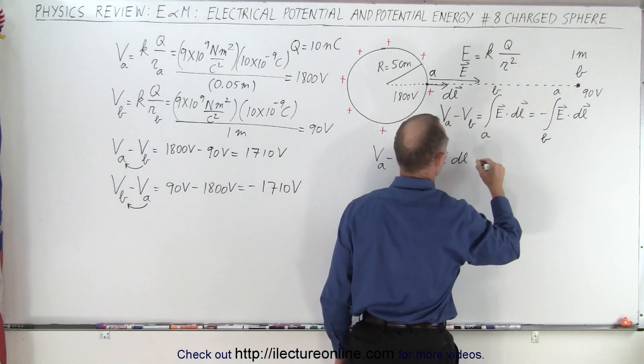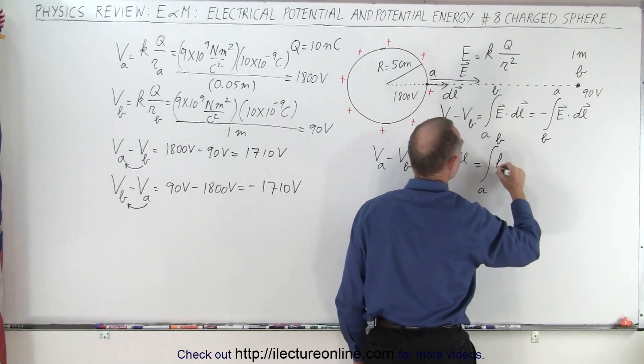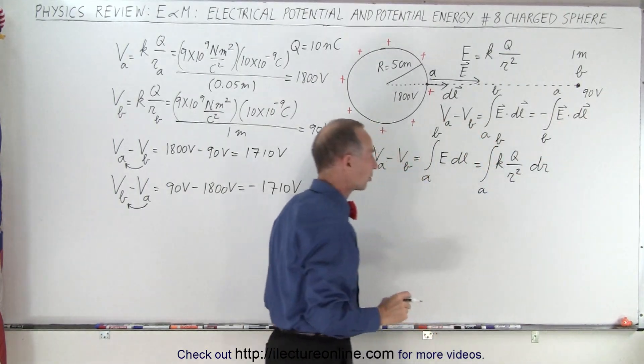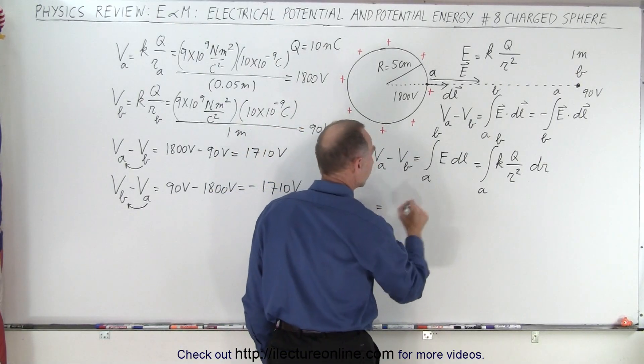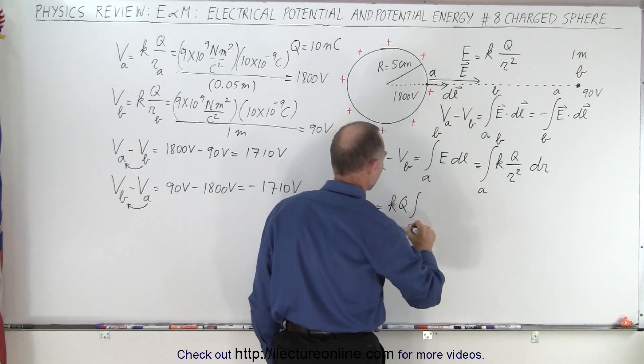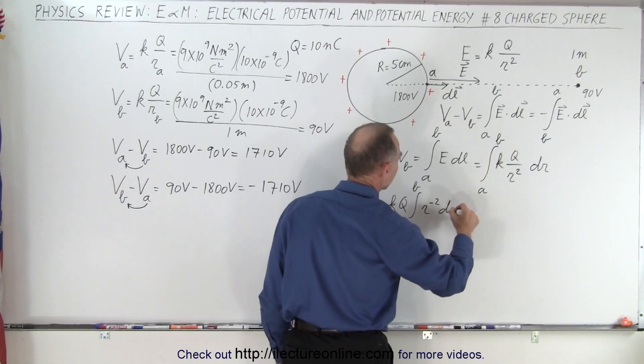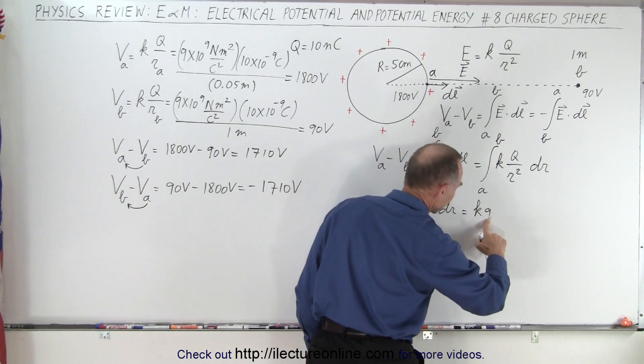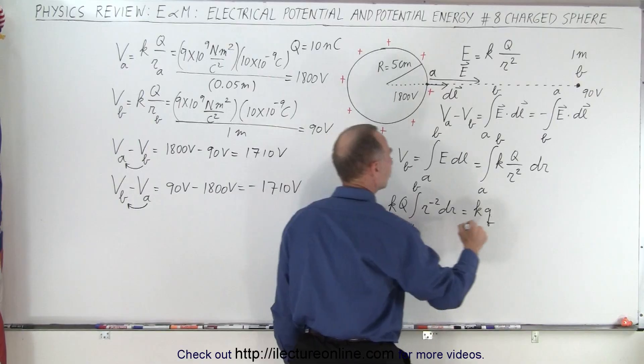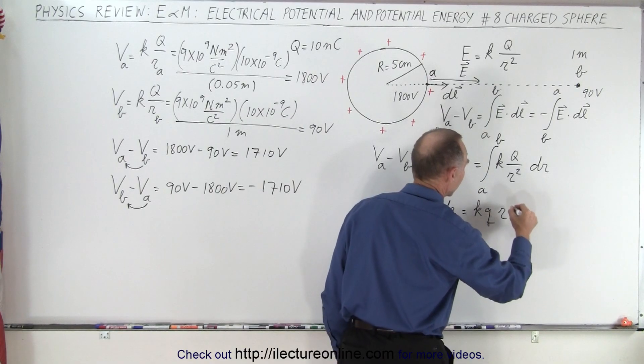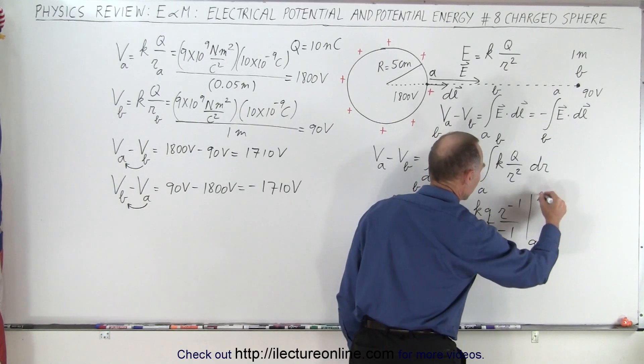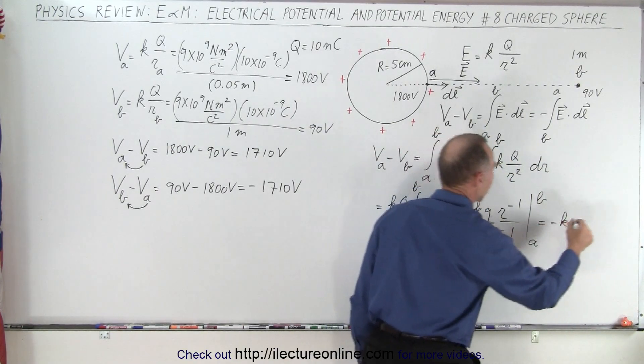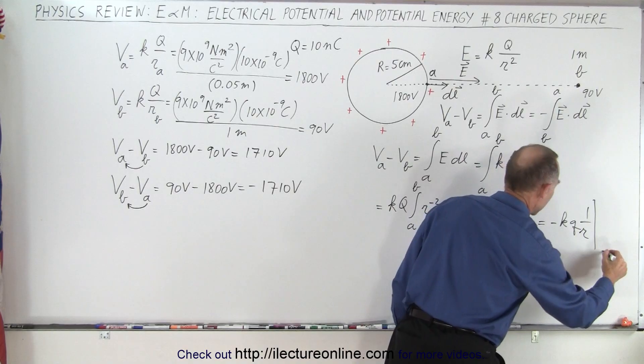We know that E is equal to this equation right here, so this can be written as the integral from A to B of KQ over R squared, and DL then becomes DR as we move away in a radial direction. So that can be written as, take the K and the Q out, we have the integral from A to B of R to the negative 2 power DR. Now we can integrate that, so this becomes equal to KQ. R to negative 2 becomes R to negative 1 divided by negative 1, so that would be times R to the negative 1 divided by negative 1, evaluated from A to B.